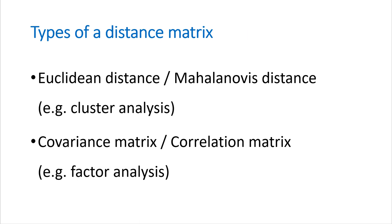There are two types of distance metrics. The first one is Euclidean distance or Mahalanobis distance. We use this kind of distance data for cluster analysis.